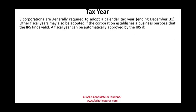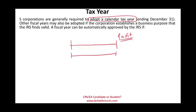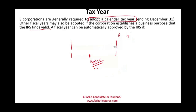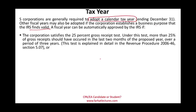S corporations are generally required to use a calendar tax year. The reason is that the profit flows to individual shareholders, who also file on a calendar year — so the S corporation's return must be completed before shareholders file their individual returns. A fiscal year may be adopted if the corporation establishes a valid business purpose accepted by the IRS, but the vast majority of S corporations use a calendar year.